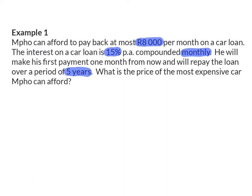What is the price of the most expensive car Mpo can afford? Here we are asked to determine the present value of a loan that Mpo can afford if he can pay R8000 per month. Usually when taking out a loan, the first payment is one period after the opening of the account. So Mpo will start repaying this loan in one month's time. Mpo wants to pay off this loan in five years, and five years worth of months means that he will make his last payment of R8000 after 60 months.